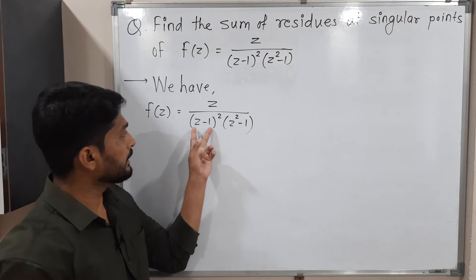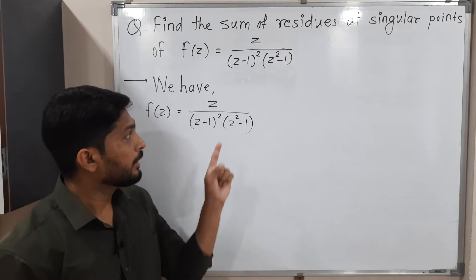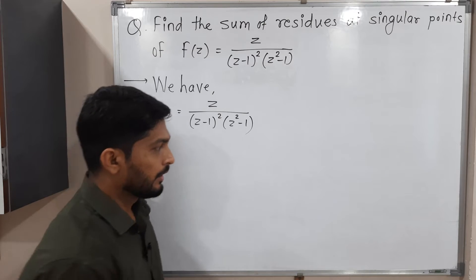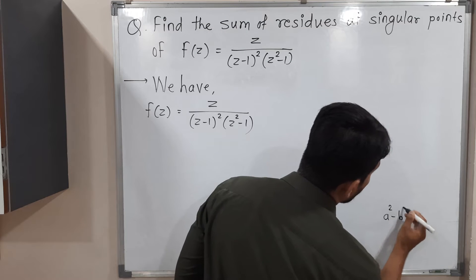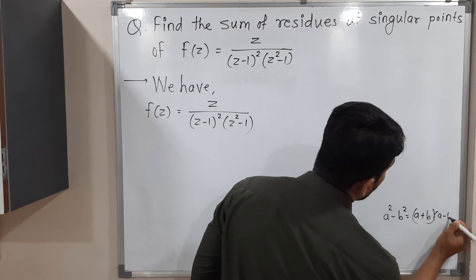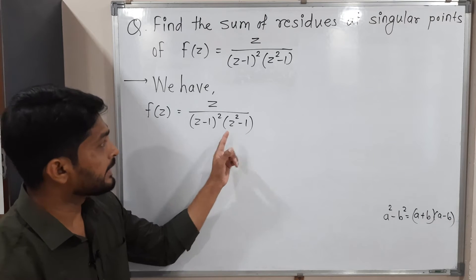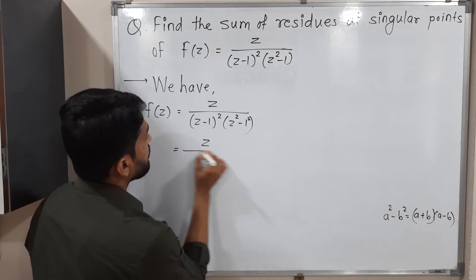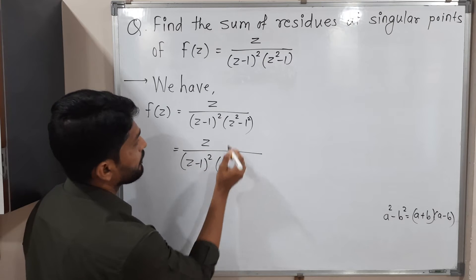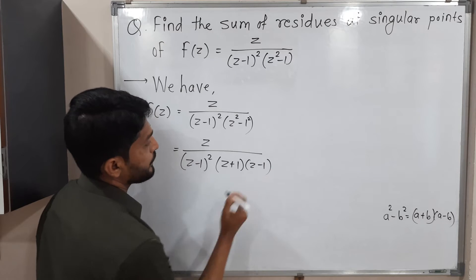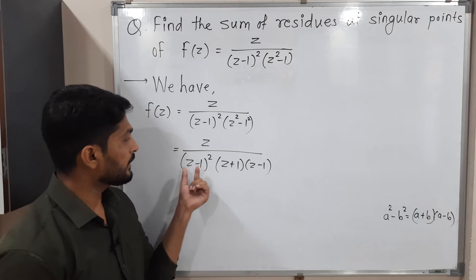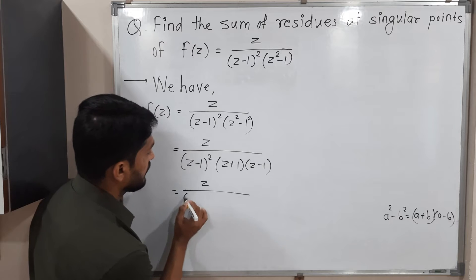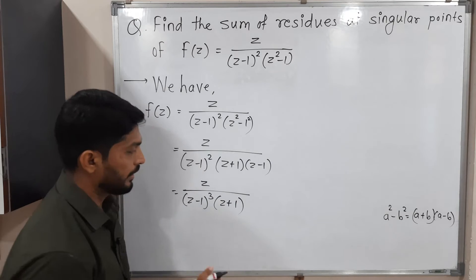In the denominator, the first bracket has a polynomial of degree one, but the second factor z squared plus 1 has degree two, so we can find its factors. Using the formula a squared minus b squared equals (a+b)(a-b), we get z squared plus 1 written as (z+1)(z-1). Combined with (z-1) squared, we get (z-1) cubed. So f(z) = z upon (z minus 1) cubed times (z plus 1).